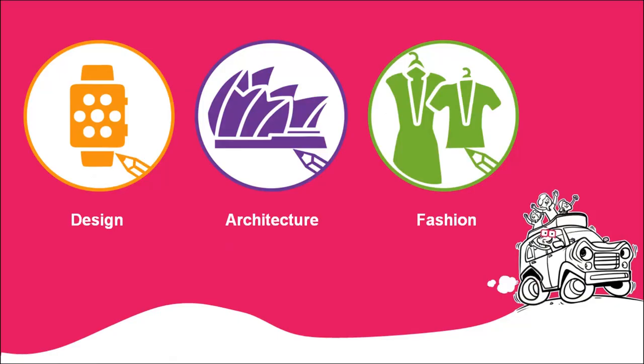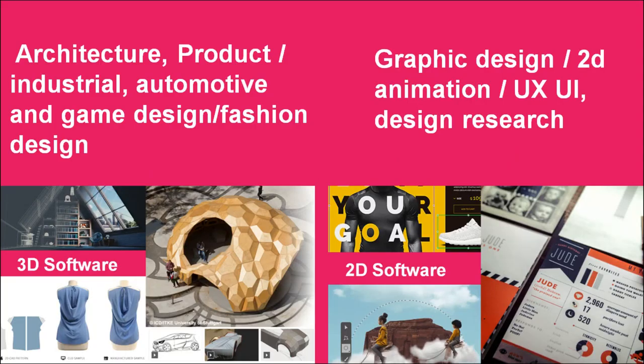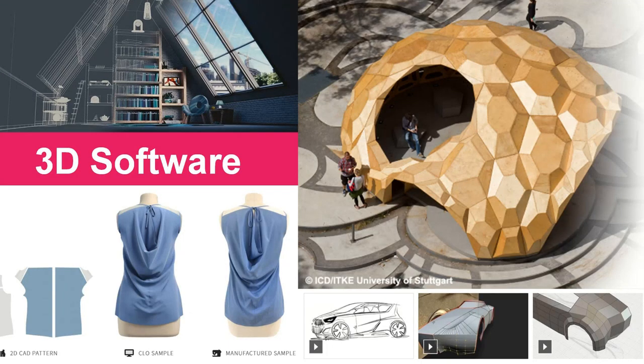You need to have clarity in the design discipline or direction you are taking up. It can be divided broadly as a discipline where you are using 3D software or 2D software. If you are going for the discipline of architecture, product, industrial, automotive, game design, or fashion design — especially considering the rise of 3D printing technology in fashion designing — you will need to use heavy 3D software.